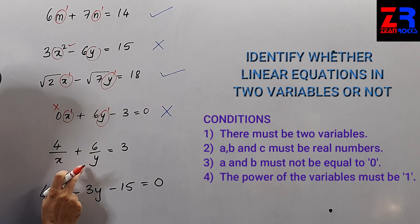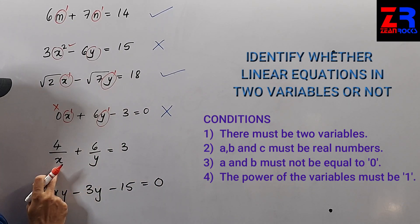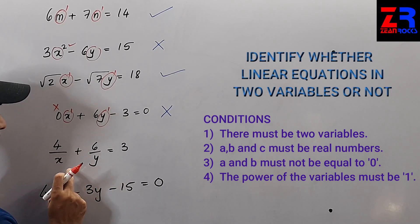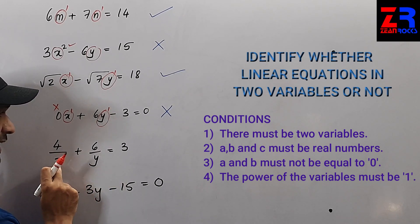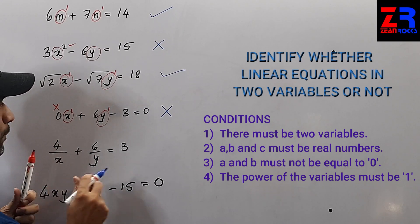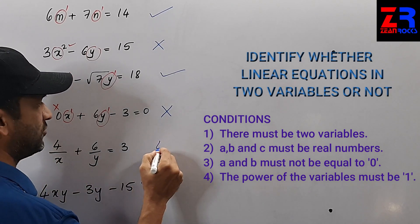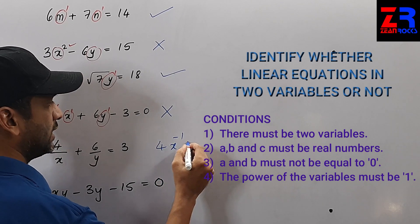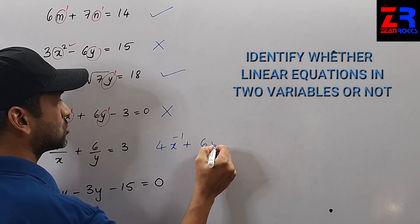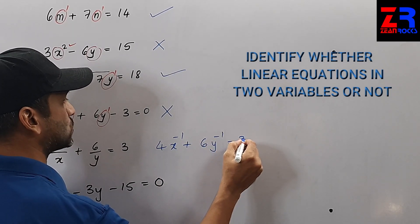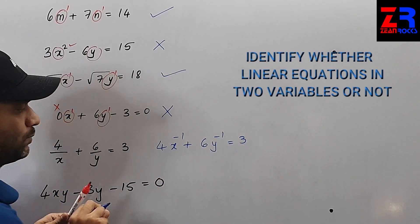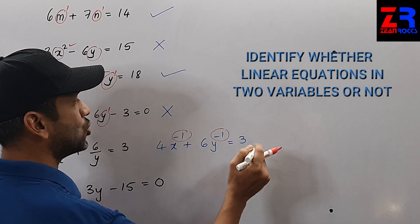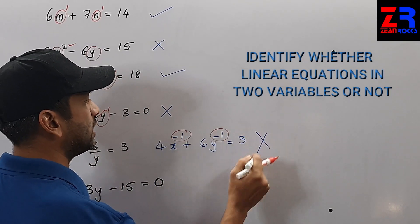Question 5: x and y are on the denominator. If I take x in the numerator, the power of x will become minus 1, and the power of the other variable will also become minus 1. Since the power is not equal to 1, this is not a linear equation.